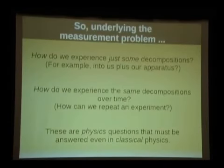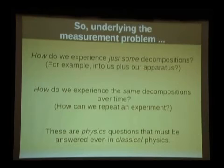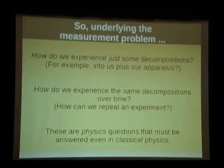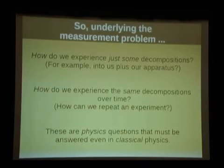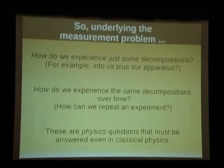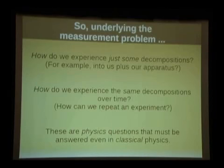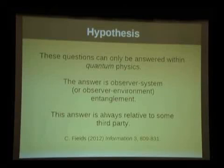Underlying the measurement problem — why we see things in particular states — there's a really deep problem: why we see things at all. Why do I see you? Why do I ever see an experimental apparatus as opposed to just undifferentiated stuff? Why do I ever see the same thing at different times? What does temporal continuity of systems even mean? These look like philosophical questions, but I'll submit they're actually physics questions that have to be answered by physics. My hypothesis is you can't do it in classical theory but you can do it in quantum theory — and the answer is entanglement.